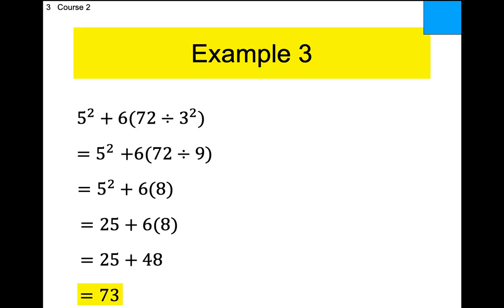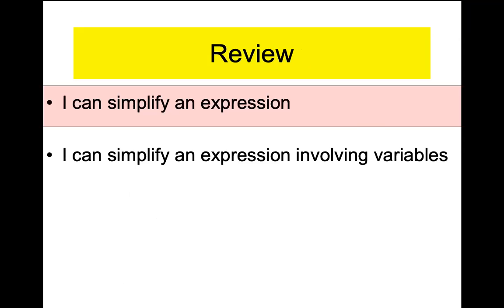Did you beat me? Easy, medium, or hard? It takes five steps. If you screw up the first step and write 6 instead of 9 for three squared, you're going to get the wrong answer. Show your work one step at a time. That's a lot of work — that's why you're in pre-algebra, not course one.